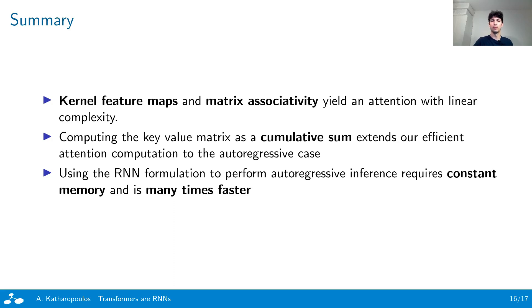Furthermore, computing this key-value matrix as a cumulative sum allows us to formulate our efficient attention for the autoregressive case without the need to explicitly mask the attention matrix. Finally, formulating the autoregressive inference of transformers as a recurrent neural network allows us to perform inference many times faster and with a constant memory requirement.